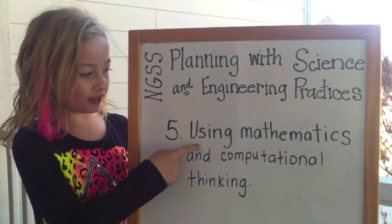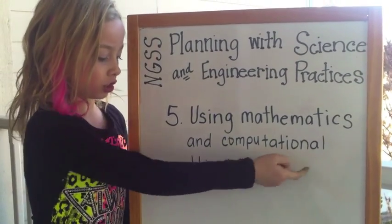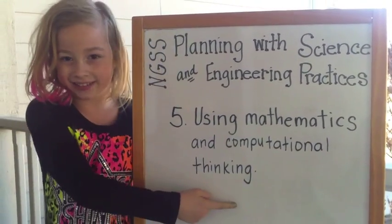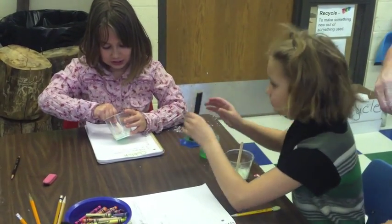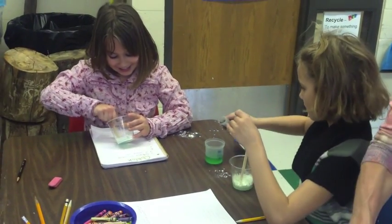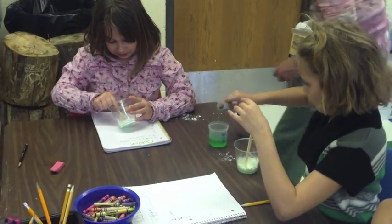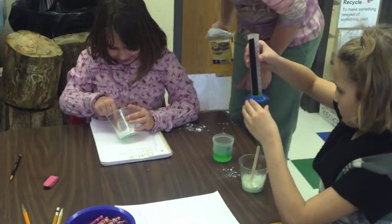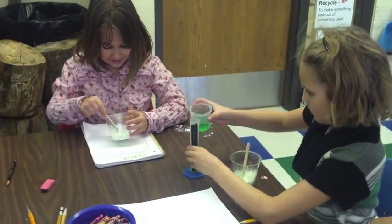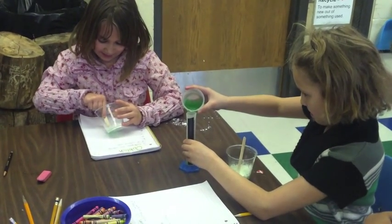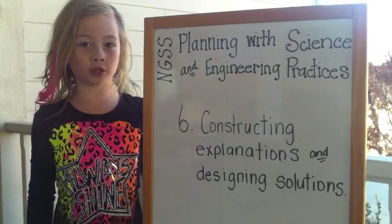Practice 5 is using mathematics and computational thinking. Mathematics is a tool that is key to understanding science, and even though it may look a little different in science versus engineering, it really brings the two together.